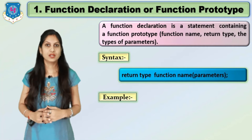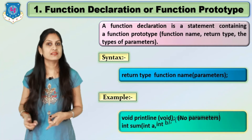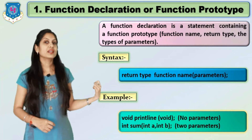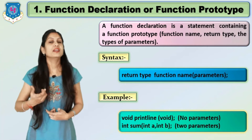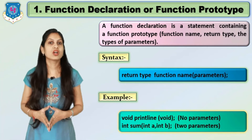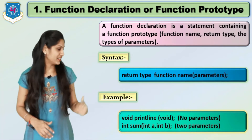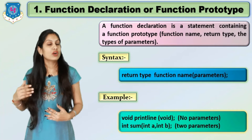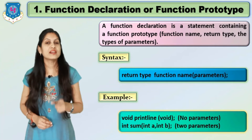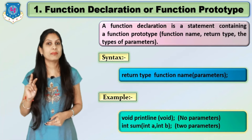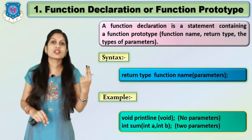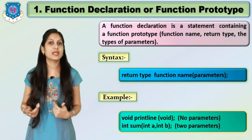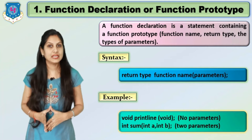For example: 'void printLine(void)' — the return type is void, so the function returns nothing and has no parameters. Second example: 'int sum(int a, int b)' — the function name is sum, it returns an integer value, and takes two parameters a and b. The addition of a and b will be of type integer, so the return type is integer. Likewise, you can write any function declaration.